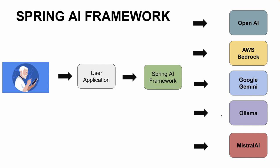So we are exposed to APIs where we can access the applications, and we can access the APIs. For example, you can use OpenAI. If you use an application from the scratch, with Spring AI Framework, you can integrate with Spring AI.